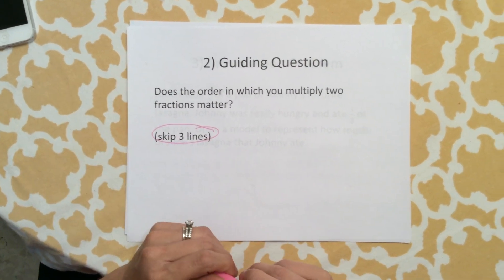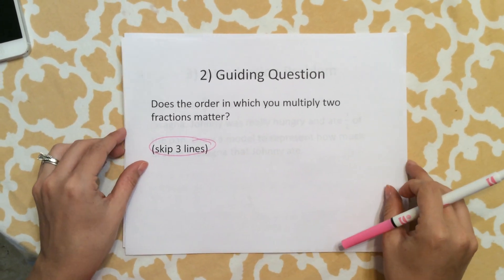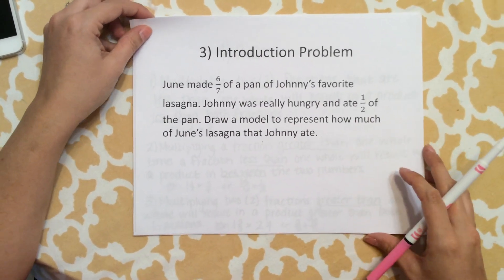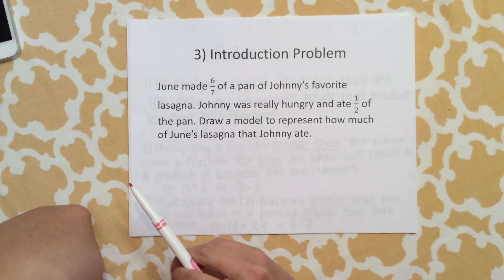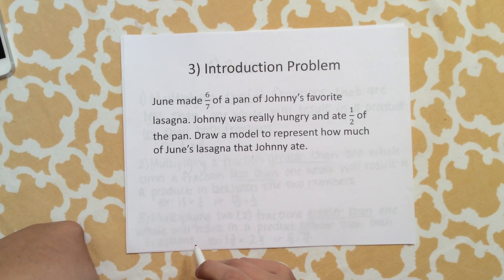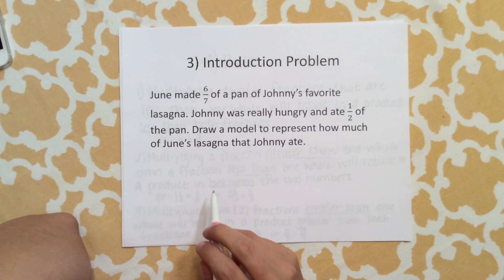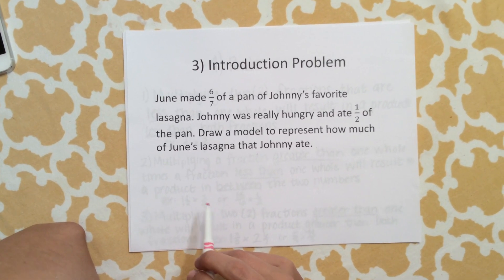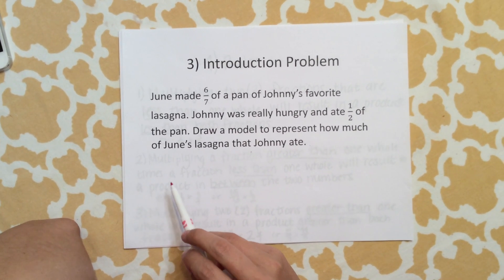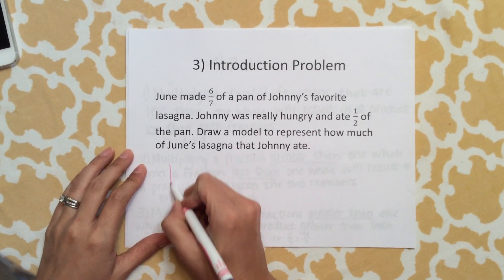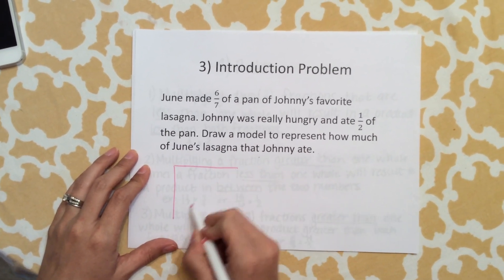Our introduction problem: June made 6/7 of a pan of Johnny's favorite lasagna. Johnny was really hungry and ate 1/2 of the pan. Draw a model to represent how much of June's lasagna that Johnny ate. We're going to start with our model. There's a couple different ways you can solve this.